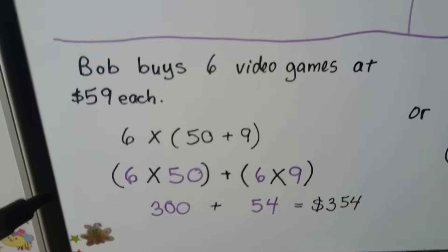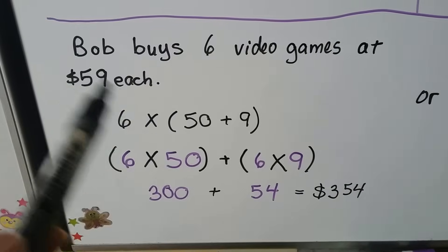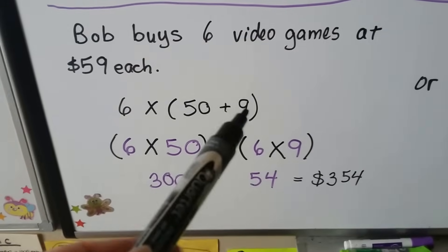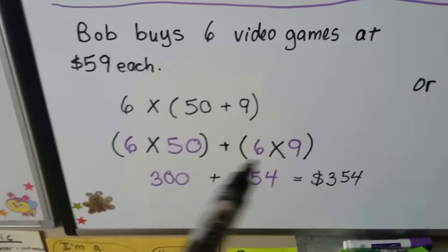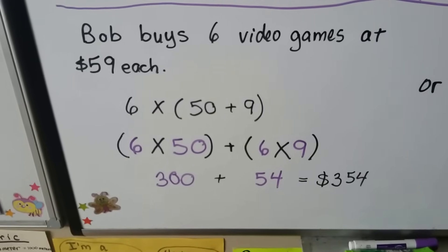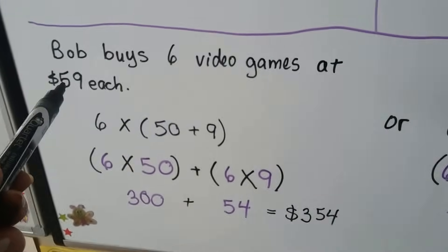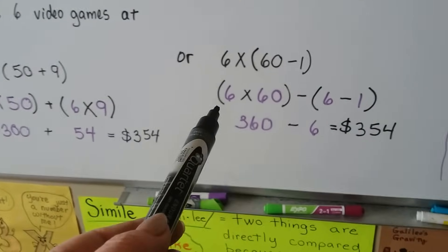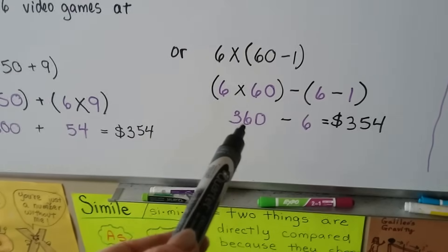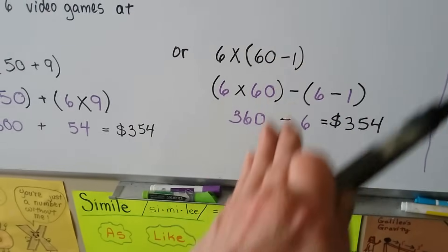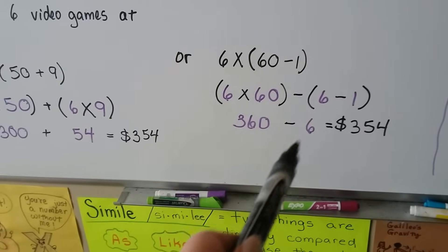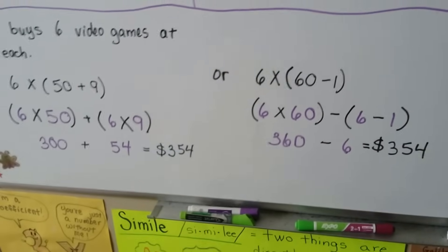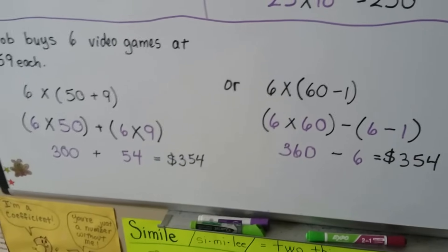Bob buys 6 video games at $59 each. We can break 59 into 50 plus 9, then do 6 times 50, which is 300, and 6 times 9, which is 54, for a total of $354. Alternatively, since 59 is 1 less than 60, we can say 6 times (60 minus 1): 6 times 60 is 360, minus 6 times 1, which is 6, giving 360 minus 6 equals 354. We can use addition or subtraction with the distributive property for quick mental math.